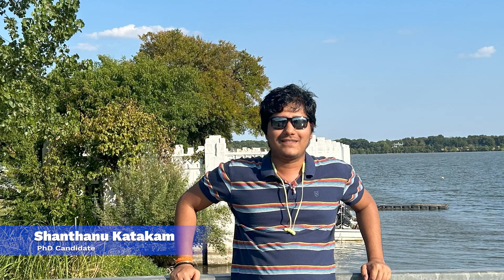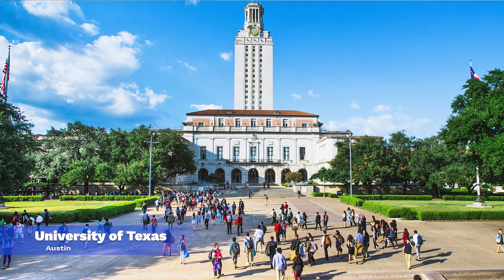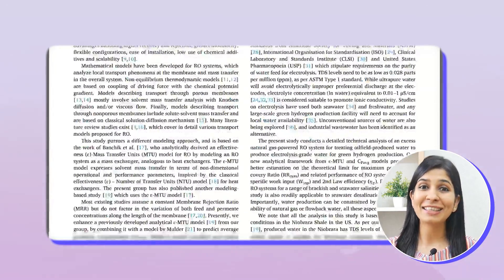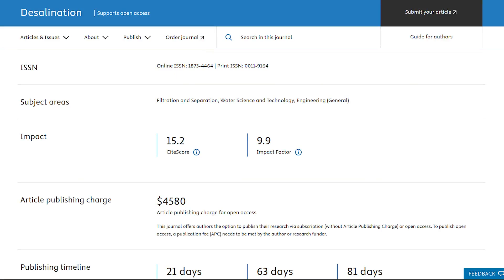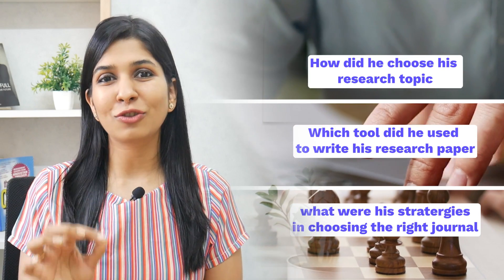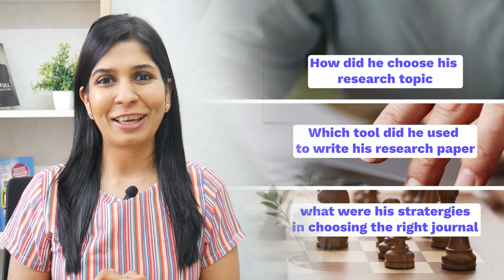Hi everyone, I'm Neha Grewal, I'm the founder of VISA and today we have with us Shantanu Katakam, a PhD candidate at University of Texas at Austin. Shantanu has published his first PhD research paper in the Desalination Journal with a 9.9 impact factor and a 15.2 cite score. Today, Shantanu is going to share with us all his secrets to doing research — how he chose his research topic, which tools he used to write his research paper, and what were his strategies to choosing the right journal for publication. So without further delay, let's get started.